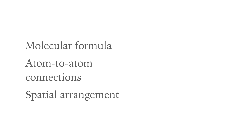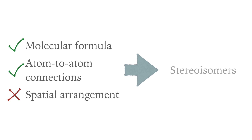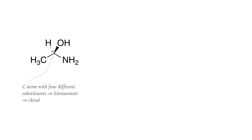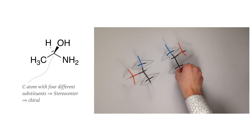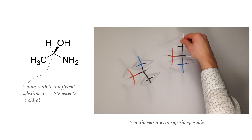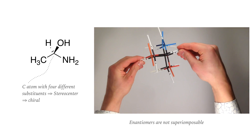What are stereoisomers? Two molecules with the same molecular formula and the same atom-to-atom connectivity but with a different spatial arrangement of the atoms are stereoisomers. For instance, a molecule with a carbon atom that holds four different substituents is a stereocenter. A molecule with a stereocenter is often chiral, and there is a molecule that is its exact mirror image. Such a pair of isomers is called enantiomers, and two enantiomers are not superimposable.